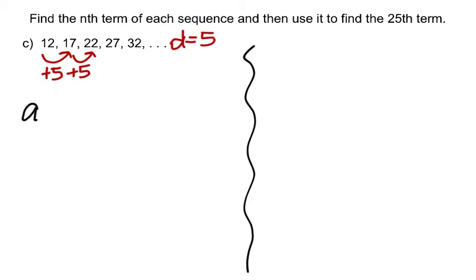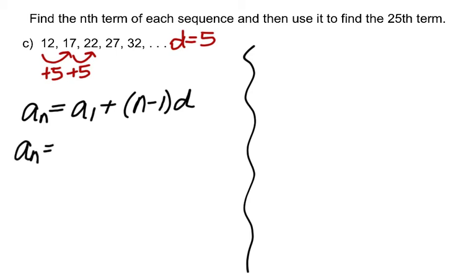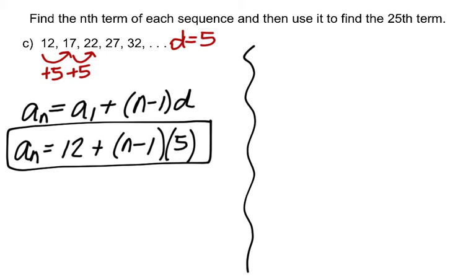If you want to use the arithmetic sequence formula for the nth term, take a sub 1 plus n minus 1 times d and substitute in what we know. Our first term a sub 1 is 12, and we add n minus 1 multiplied by d, where d is 5. You could leave it like this, or distribute. Now let me show the alternative approach without this formula.